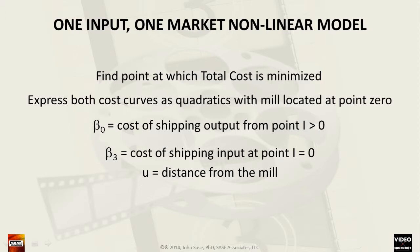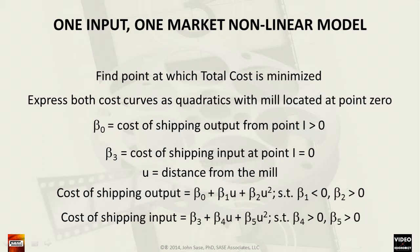The variable mu is the distance in miles plotted along the horizontal axis between the vineyard and the market. Therefore, we can express the cost of shipping output — the cases of wine — as beta 0 + beta 1 * mu + beta 2 * mu², such that beta 1 is negative and beta 2 is positive. We can express the cost of shipping input — the lugs of fresh grapes — as beta 3 + beta 4 * mu + beta 5 * mu², such that beta 4 is positive.